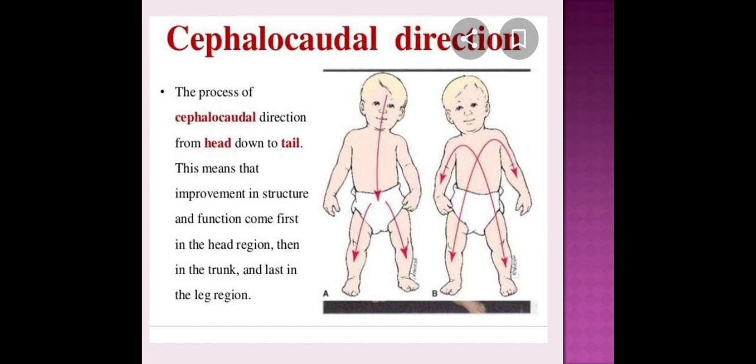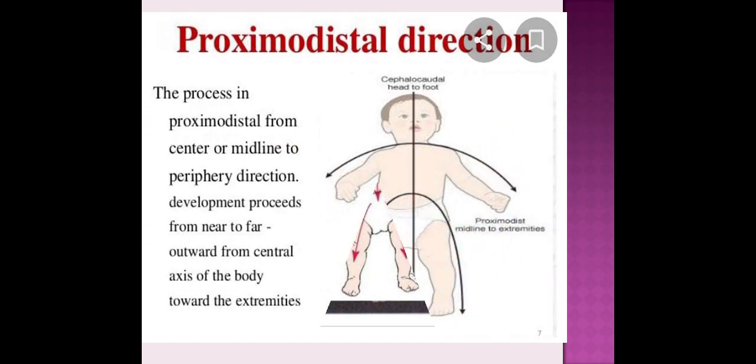When the child gains control over the legs, then the child is able to crawl, stand, walk, run, jump and climb. Proximodistal direction: the process from center or midline to periphery direction. Development proceeds from near to far outward, from central axis of the body towards the extremities. The spinal cord develops first, then the other parts of the body.